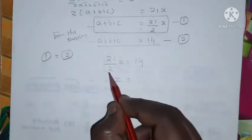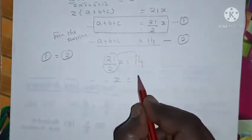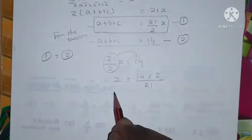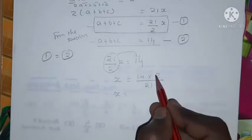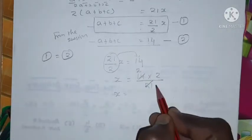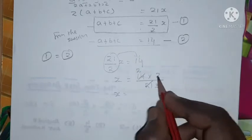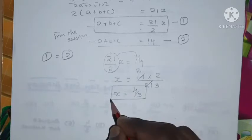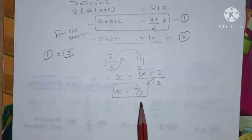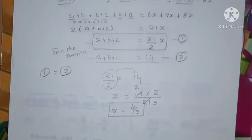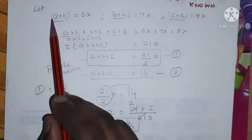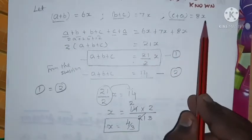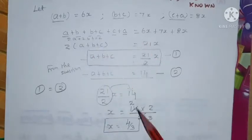Solving for x — bringing 21/2 to the other side: x = (14 × 2) / 21. Since 2 × 7 = 14 and 3 × 7 = 21, this simplifies to x = 4/3. So x = 4/3. We already have a+b = 6x, b+c = 7x, and c+a = 8x.